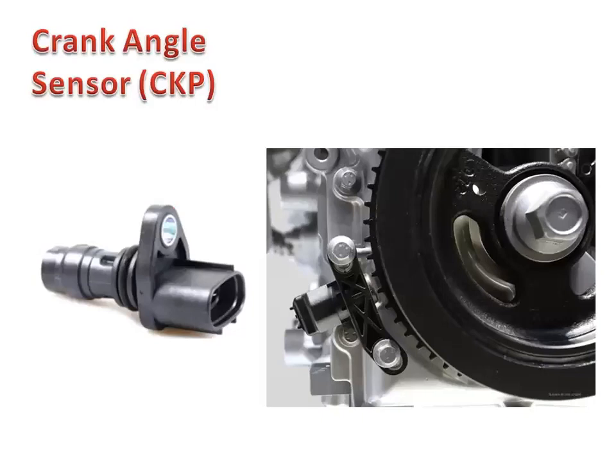The crank angle sensor or CKP sensor is used to monitor the position of the crankshaft and its rotational speed. This will be the basis to control the fuel injection, ignition timing, and other parameters.